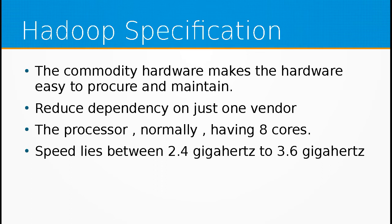For the storage part, the general formula for how much hard drive storage you need for each data node follows the rule that for every single core of CPU, you would require at least two terabytes of hard drive.